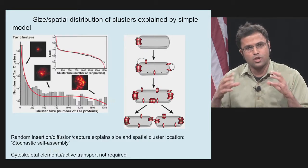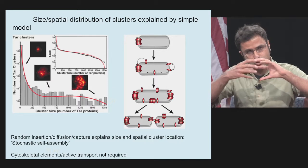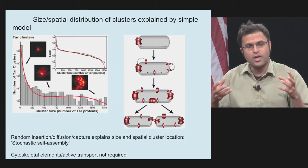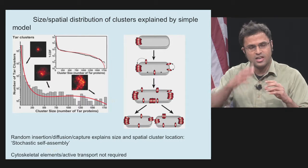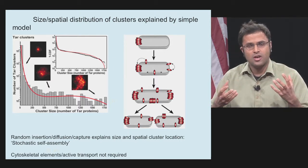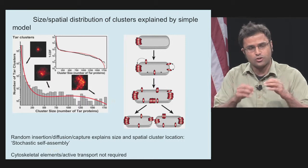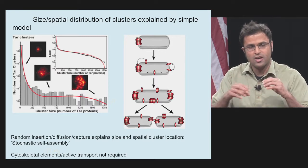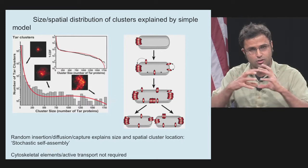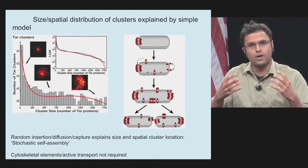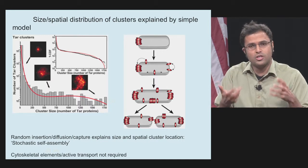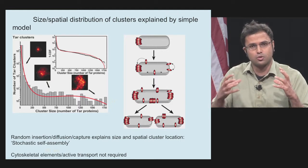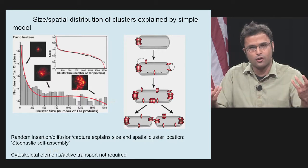Taking this information, you can actually use it to understand how these receptors distribute along the membrane. One simple thing you can do is take the size distribution and plot it in a histogram. When you do that, you find there's no preferred cluster size — you get a stretched exponential distribution. It turns out you can explain that size distribution and the receptor locations with a few very simple assumptions: that membrane receptors are inserted in the membrane, diffuse until captured by clusters, and that the capture rate is dependent on the size of the pre-existing cluster. Importantly, you don't need to invoke cytoskeleton or active transport.